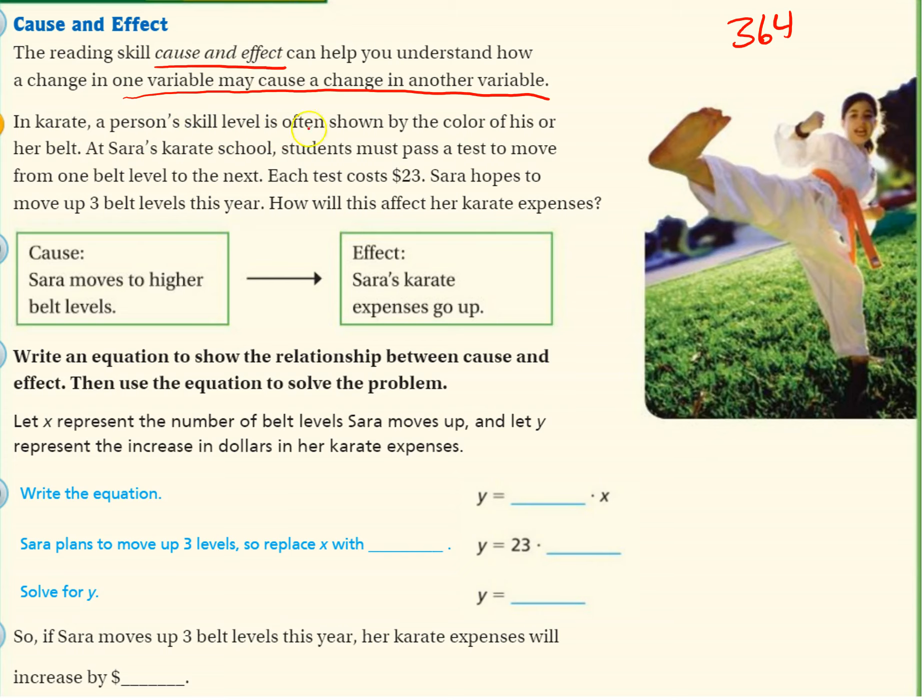In karate, a person's skill levels are often shown by the color of his or her belt. At Sarah's karate school, students must pass a test to move from one belt level to the next. Each test costs $23. Sarah hopes to move up three belt levels this year. How will this affect her karate expenses?